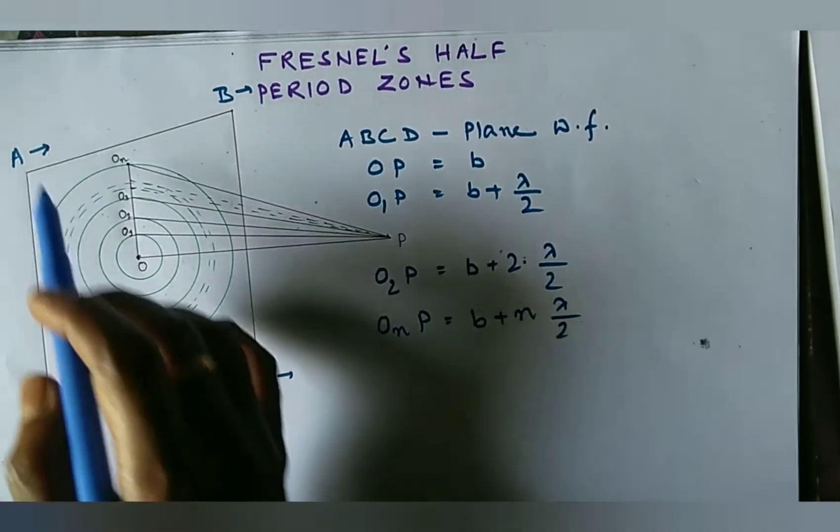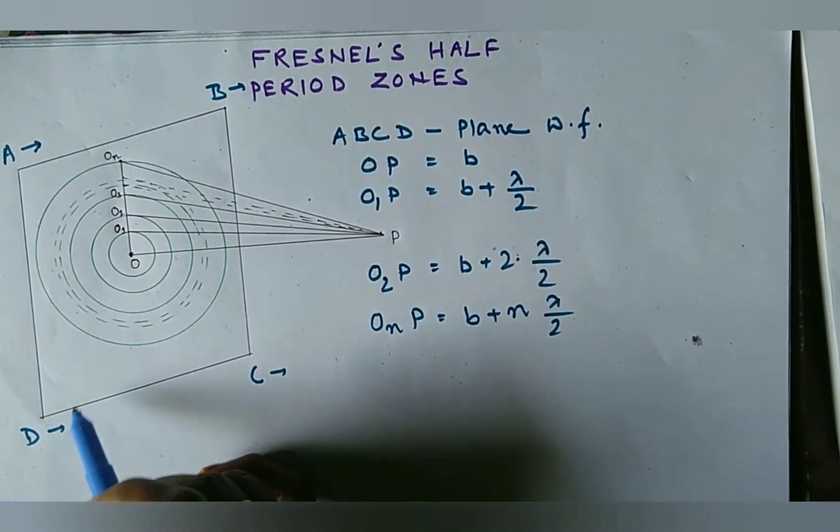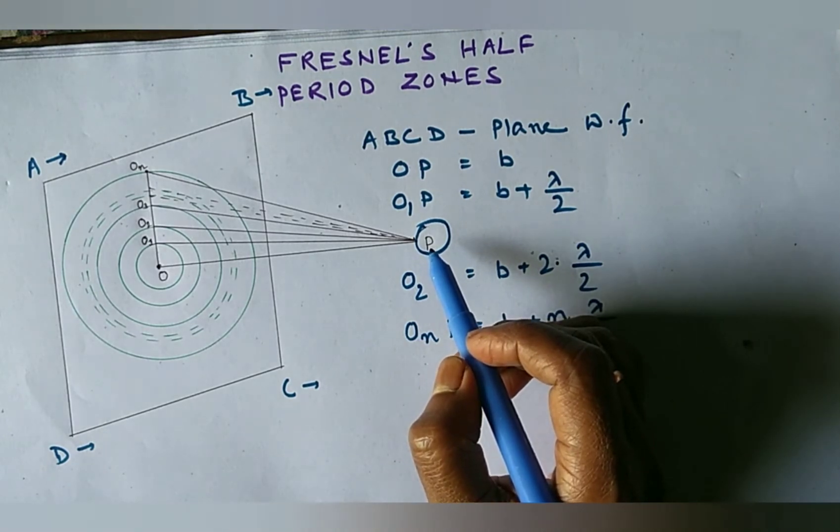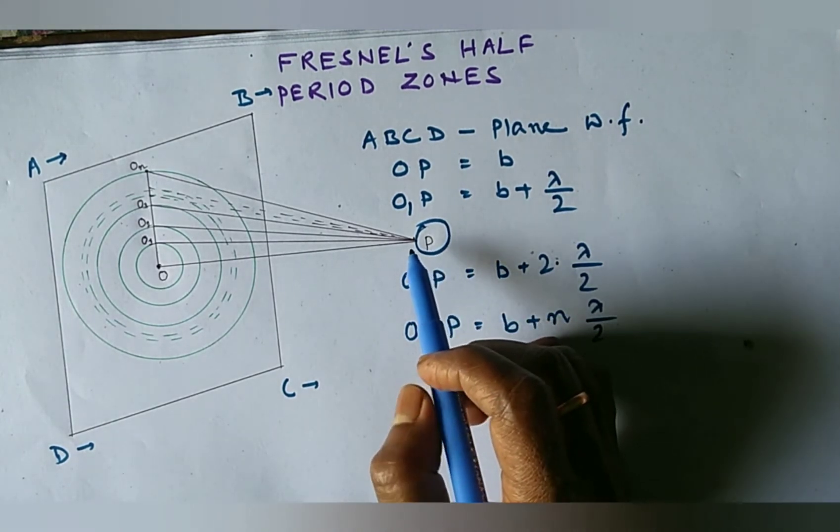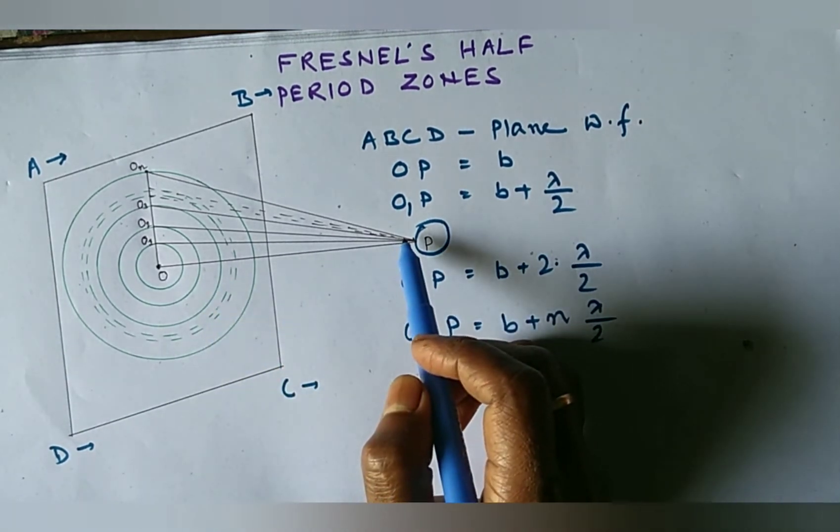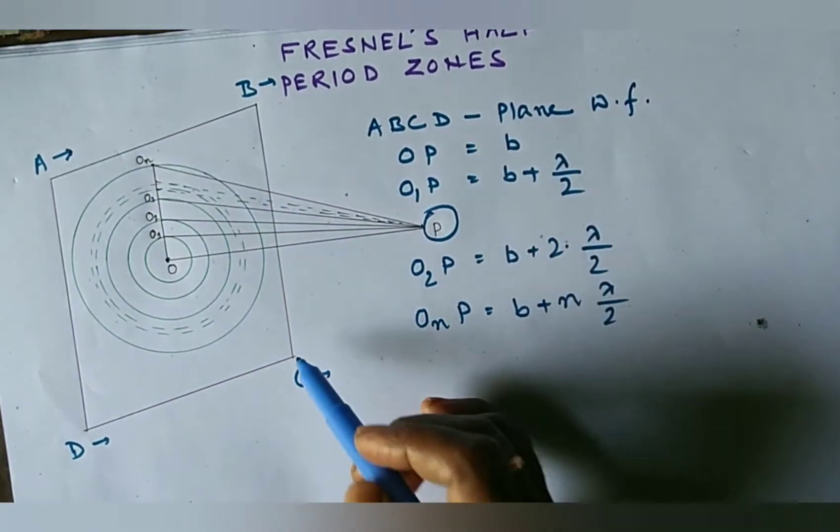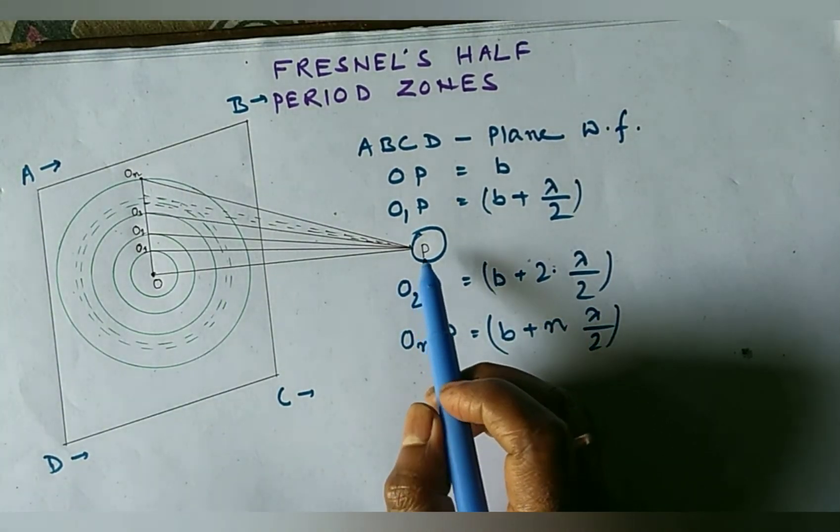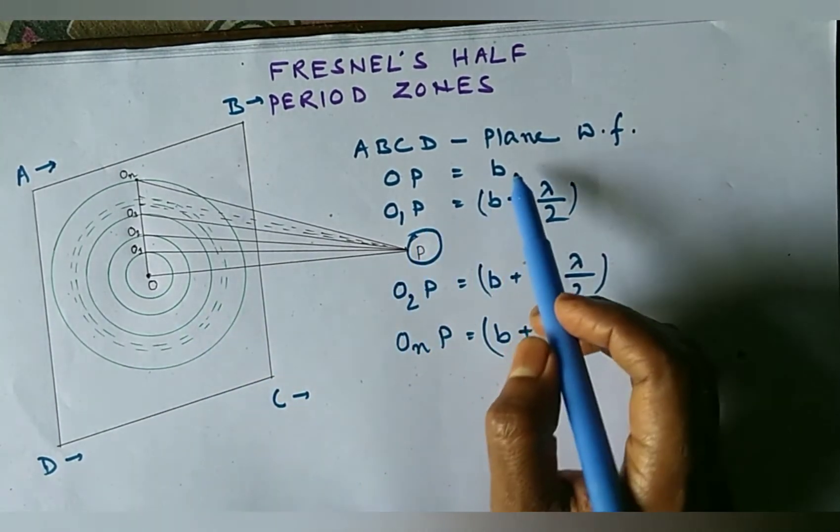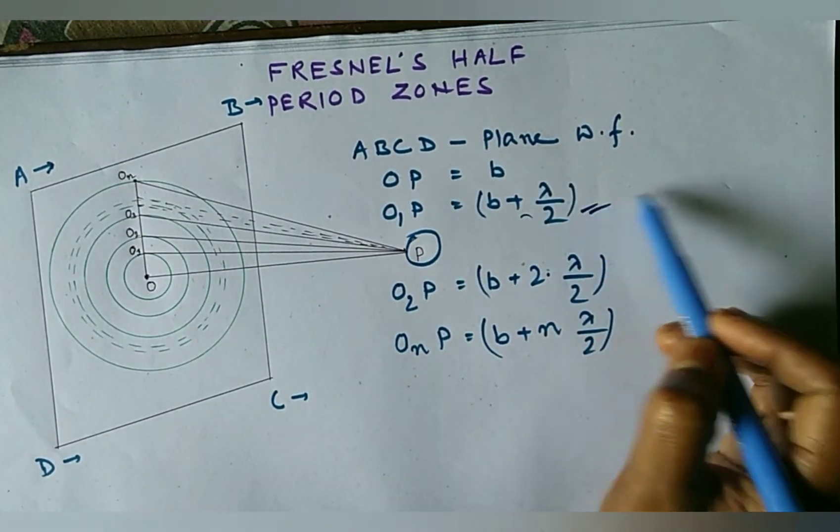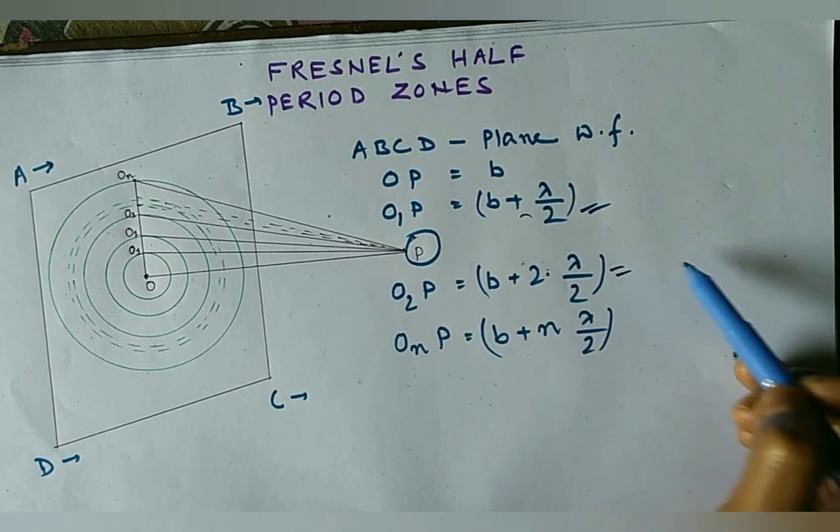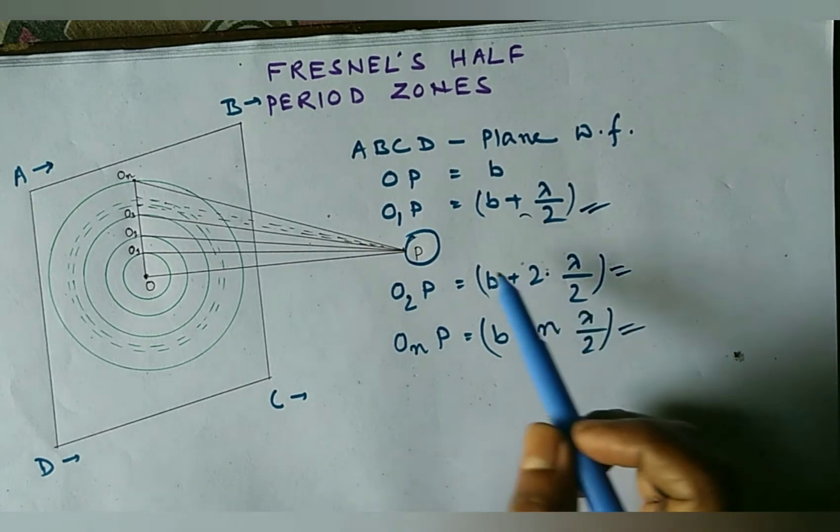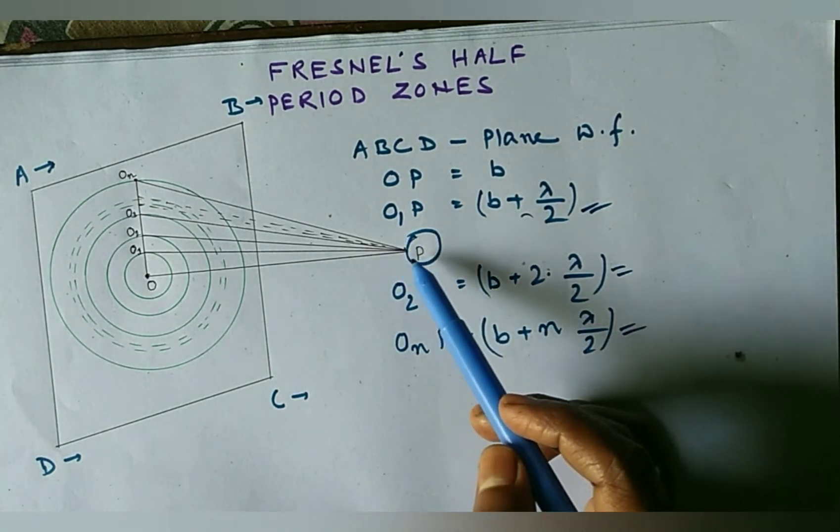ABCD arrowhead represents its direction and P is an external point. We draw a perpendicular PO from P to ABCD. Then we draw concentric spheres of radii B plus lambda by 2, B plus 2 lambda by 2, and B plus N lambda by 2, taking P as center.